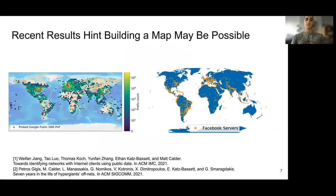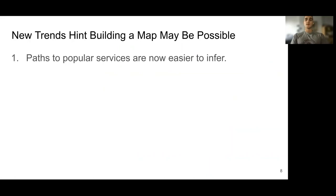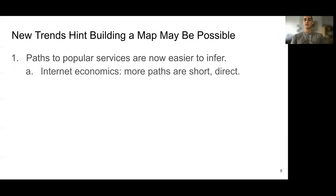In addition to these new measurement methods, new trends suggest that building a map may be possible. First, paths between users and services are easier to infer. Easier path inference means building component three of the map could be easier, since if we could confidently infer paths from users to services, we would not need to explicitly measure them. Paths are easier to infer first due to internet economics: content providers peer closely with eyeball networks, implying that more paths from services to users are short, direct paths — from content providers directly to eyeball networks.